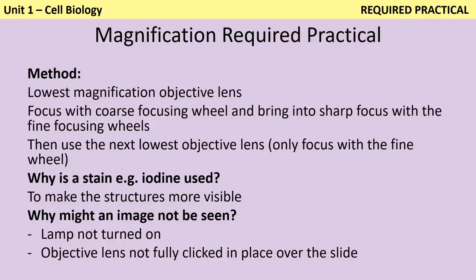The first required practical in Biology Paper 1 is about light microscopy. You should be able to describe the method: start with the stage as high as possible using the lowest power objective lens, focus firstly with the coarse focusing wheel and then the fine focusing wheel, then switch to a more powerful objective lens if needed, focusing with just the fine focusing wheel. A stain is used to allow you to see the transparent structures of the cell. For troubleshooting: if the image is out of focus, use the focusing wheels; if the object is too small, use a higher power objective lens; if you can't see an image at all, check that the lamp is on and the objective lens is fully in position.